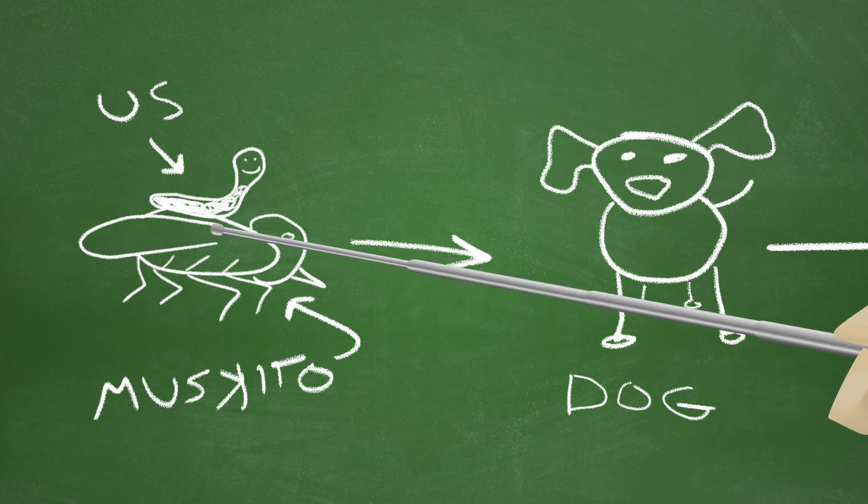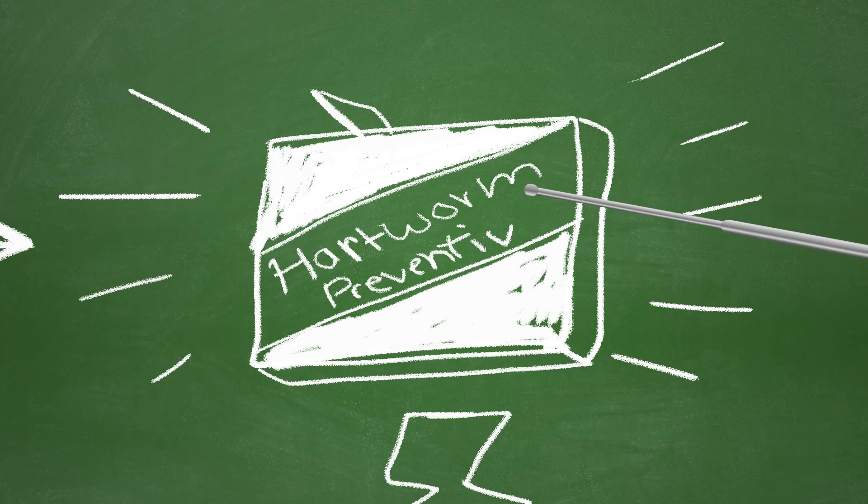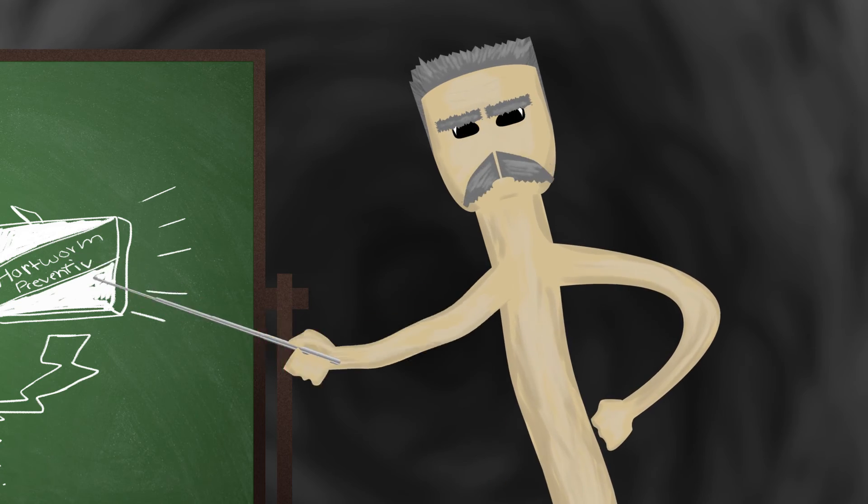Mosquitoes are doing a great job helping us infect dogs, but now more and more dogs are using heartworm preventative, killing us off before we can mature and cause full-blown heartworm disease.